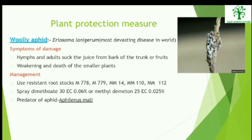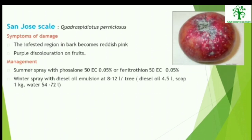Plant Protection — Woolly Aphid: Nymphs and adults suck juice from the bark of the trunk or fruits, causing weakening and death of smaller plants. Management: use resistant root stocks and spray Dimethoate 30 EC at 0.06% or Methyl demeton 25 EC at 0.025%.